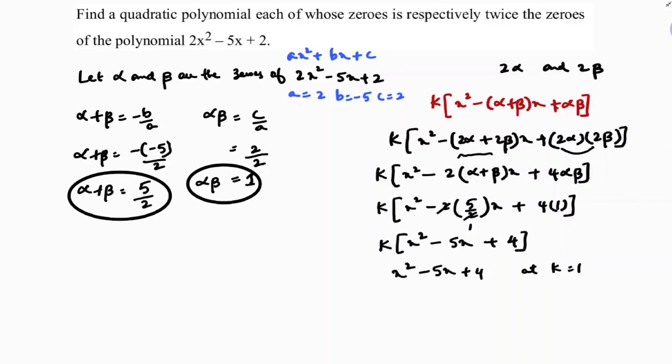Therefore, the polynomial whose zeros are 2 alpha and 2 beta is x squared minus 5x plus 4. So in this way you can simplify using the first method.